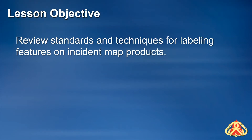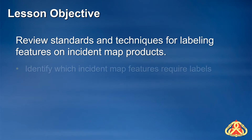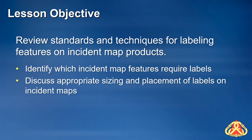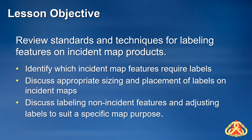The objective of this lesson is to review standards and techniques for labeling ICS features on incident map products. Students who complete part one of this lesson will be able to identify which ICS map features require map labels, discuss how to appropriately size and place label text on incident maps, point to a few examples of non-ICS features that might be labeled on incident maps, and discuss how a GISS might adjust map labels to make certain features or aspects of a map stand out.